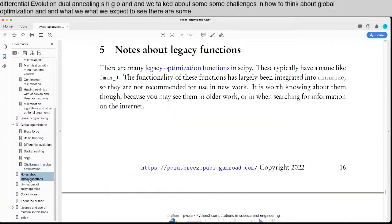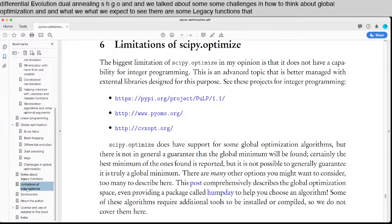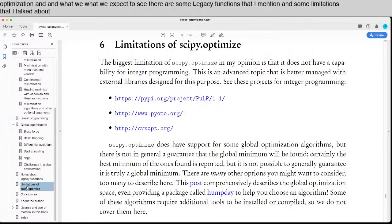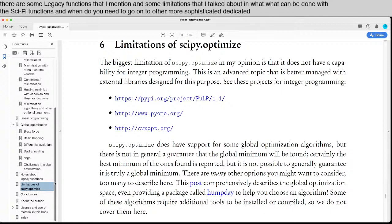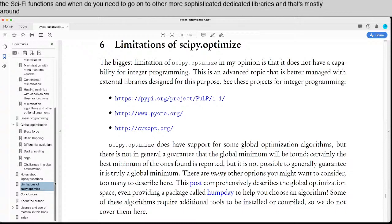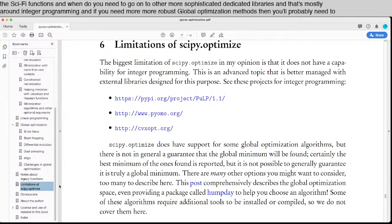There are some legacy functions I mentioned and some limitations I talk about in what can be done with SciPy functions and when you need to go on to other more sophisticated, dedicated libraries. That's mostly around integer programming. If you need more robust global optimization methods, you'll probably need to go beyond what's available in SciPy.